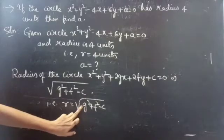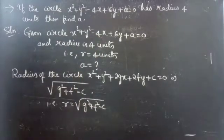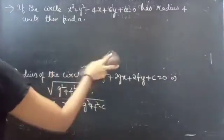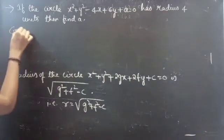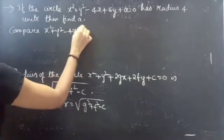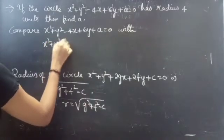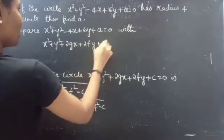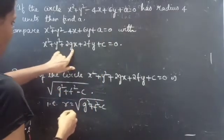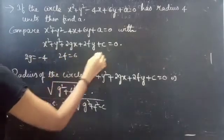But we need to find the values of g, f, and c from the given circle equation. In order to find g, f, and c, we will compare the given circle x² + y² - 4x + 6y + a = 0 with x² + y² + 2gx + 2fy + c = 0. Now we can equate the coefficients of x, y, and the constant. We get 2g = -4, 2f = 6, and c = a.